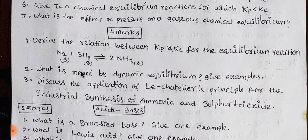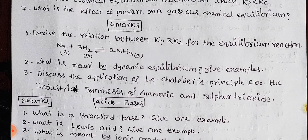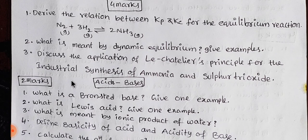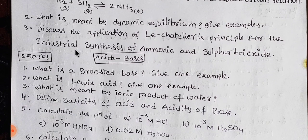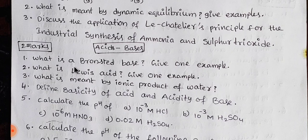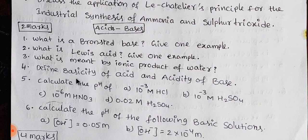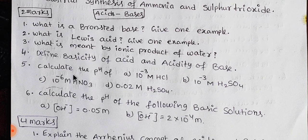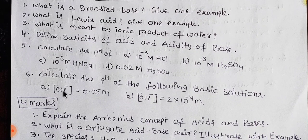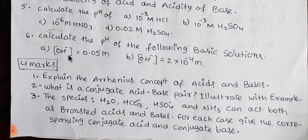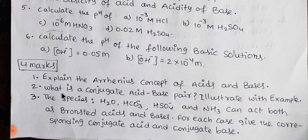It is related to what is meant by dynamic equilibrium, and we'll explain the example. Next, ammonia and sulfur trioxide. Okay, next — the second lesson is acid-base. Acid-base two-mark questions: what is a Bronsted base, give one example; what is a Lewis acid, give one example; what is meant by ionic product of water; define basicity of acid and acidity of base; calculate the pH — pH sums are rare but you can add a little bit on pH values and calculate. The next one is 4 marks — we have three questions on this page.